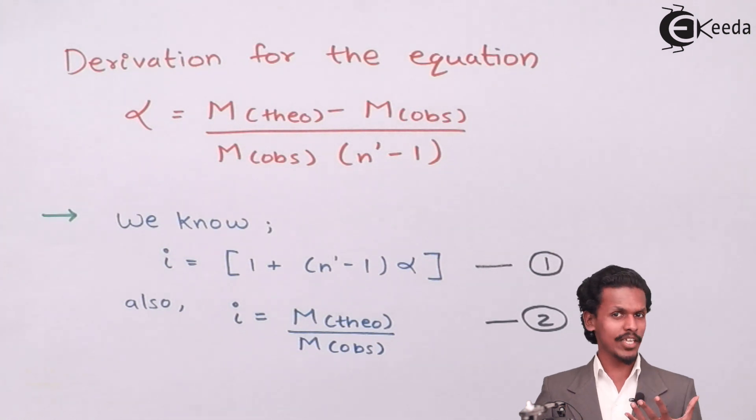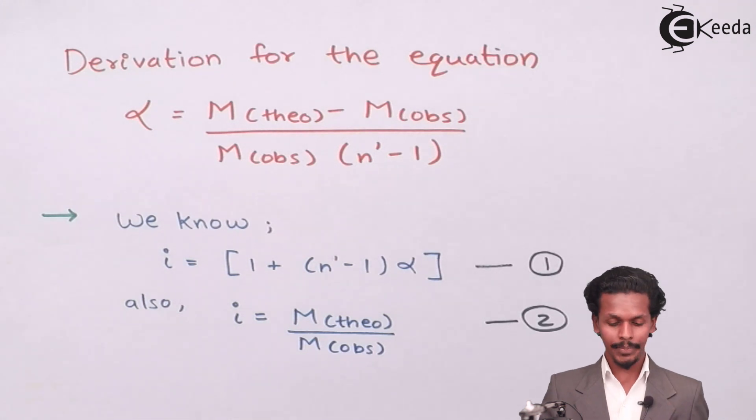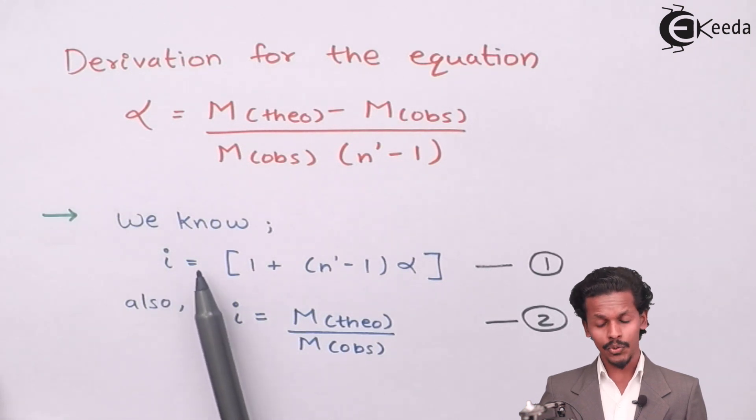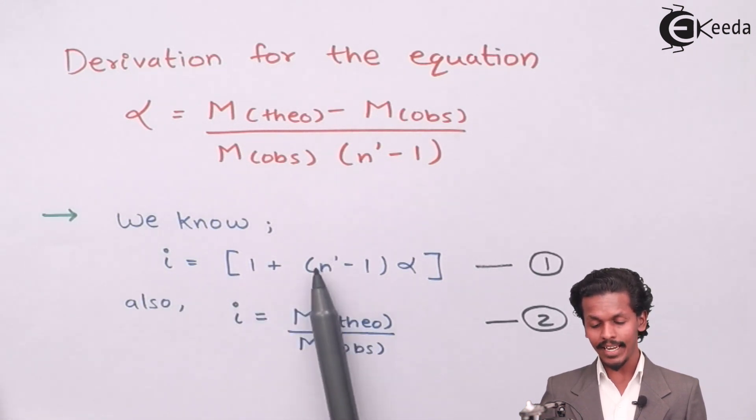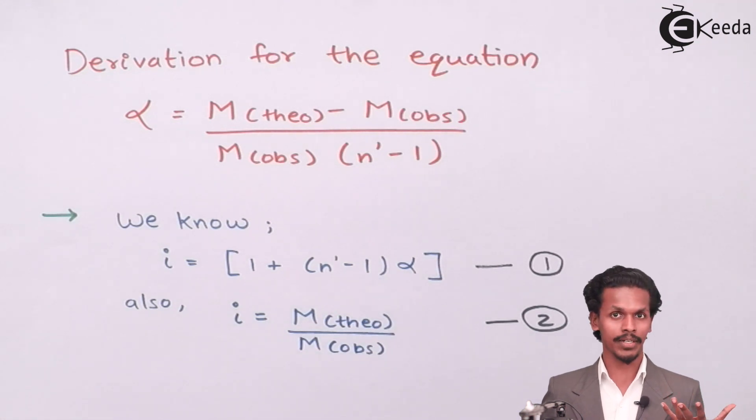So students, to prove this equation we should know what is Van't Hoff factor and the relation between degree of dissociation, in which earlier we have studied that i equals 1 plus n bar minus 1 into alpha. This alpha means degree of dissociation. This is the thing that we have proved initially also.